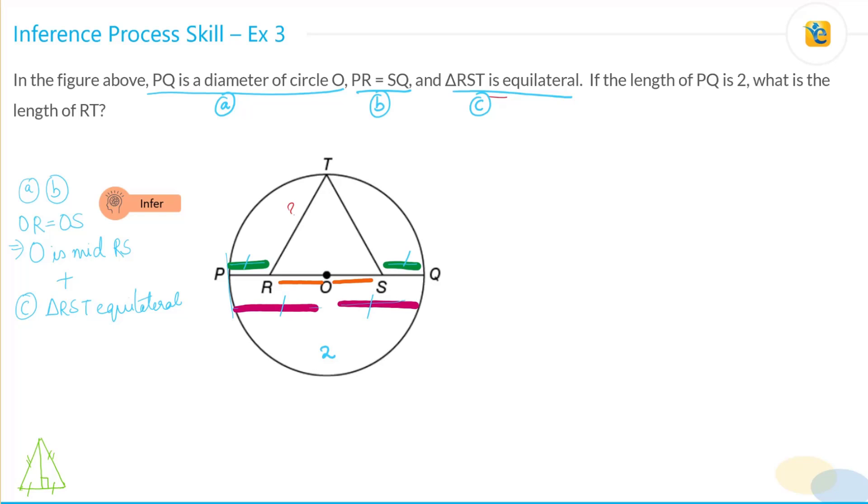So now, if you do the reverse application of this particular concept, what you will understand is that if I drop this line T, a line from T to O, then this angle is going to be 90 degrees. That is the inference that you can draw. So OT is perpendicular on RS. And you're able to draw that inference because you know that O is the midpoint of RS. So that's the second inference that we have drawn.